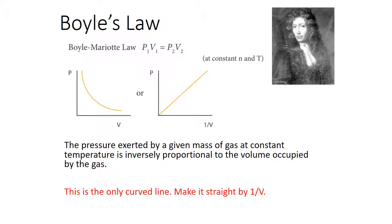The first law is Boyle's Law: P₁V₁ equals P₂V₂. Pressure is inversely related to volume — as you increase pressure, volume decreases. Because it's an inverse relationship, a graph of pressure over 1/volume gives a straight line at constant moles and constant temperature.